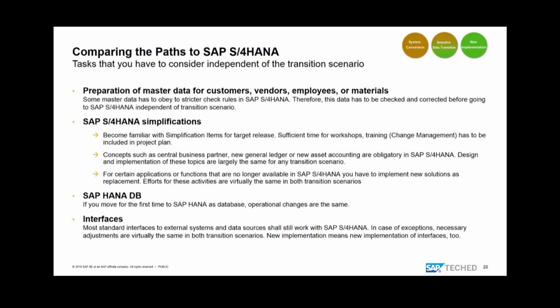Simplification items describe incompatible application changes that are important for system conversion, but also for new implementation design. Simplifications are application changes, meaning this is not a pure IT project — it requires application knowledge. You must involve your functional areas in the project. When it comes to the HANA database, if you're moving to HANA for the first time, you need to learn how to operate it — backup and recovery, performance tuning, etc. — and these efforts shouldn't be underestimated.